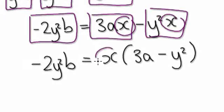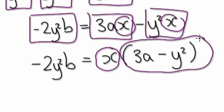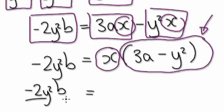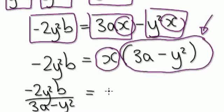Visualize it as this: you've got x here multiplying this bubble here. So divide both sides by this bubble just so that x can be on its own. Equals minus 2y squared b over 3a minus y squared, equals x.